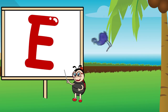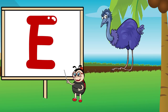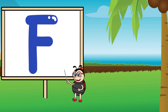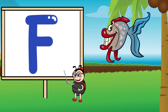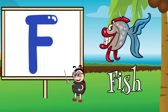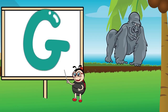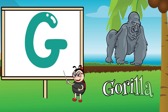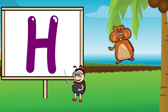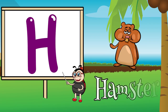E is for emu, i, emu. F is for fish, f, fish. G is for gorilla, g, gorilla. H is for hamster, h, hamster.